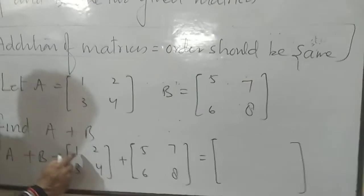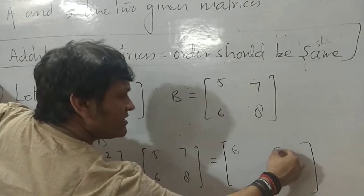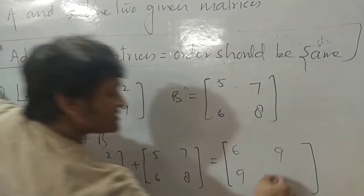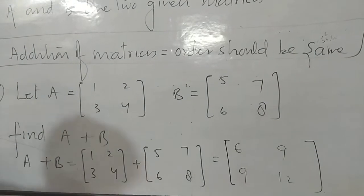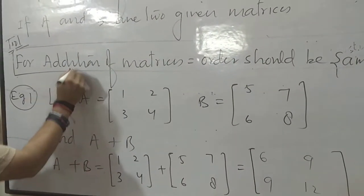Like this. One plus 5, 6. Two plus 7, 9. Three plus 6, 9. Four plus 8, 12. Addition. Same way subtraction.